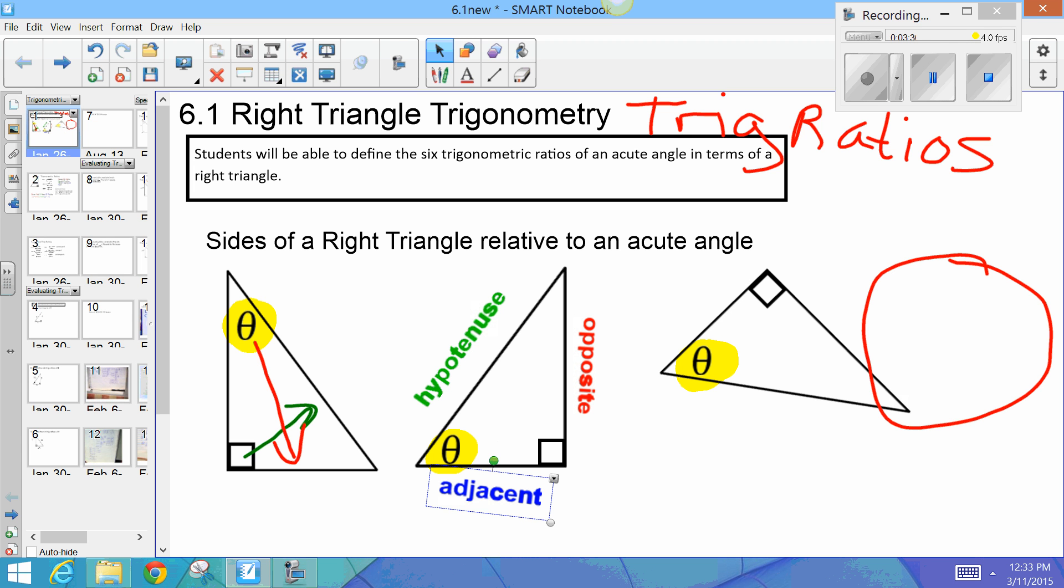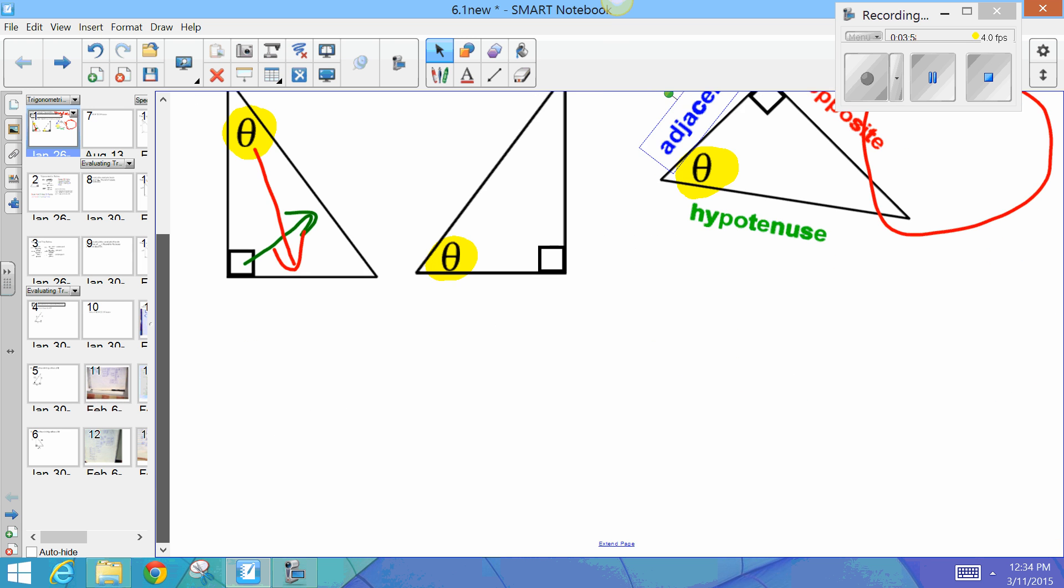Alright, there we go for that one. Third triangle. Hypotenuse is across from the right angle. Opposite is across from angle theta. And adjacent is next to angle theta. Okay. So, that's it for that.